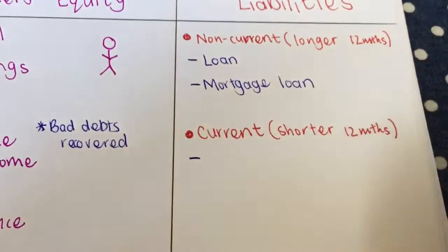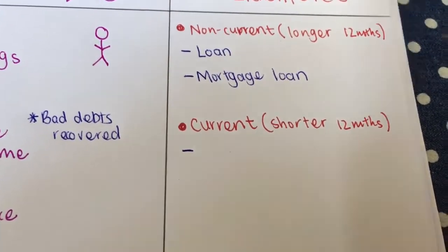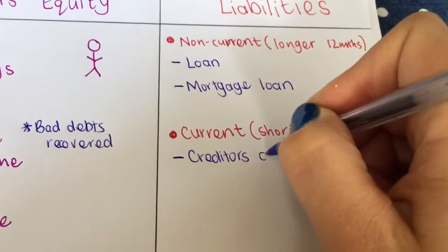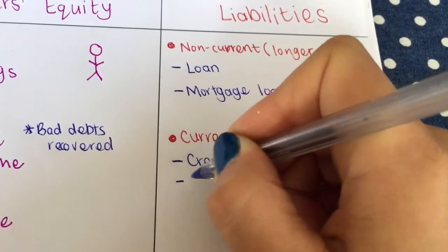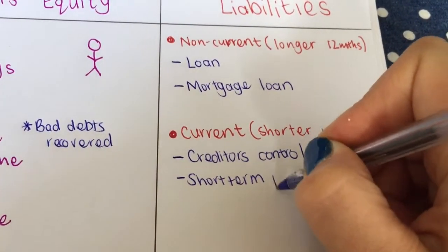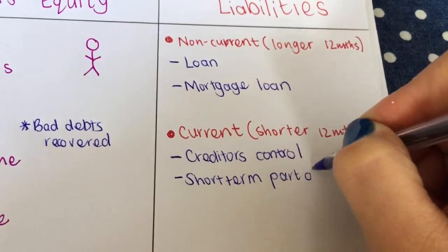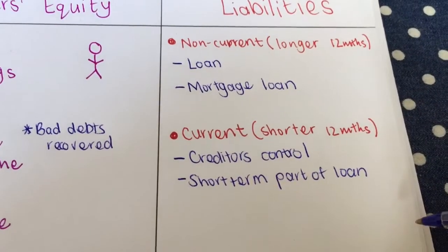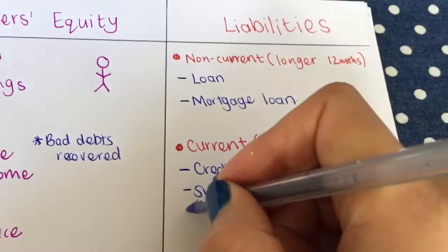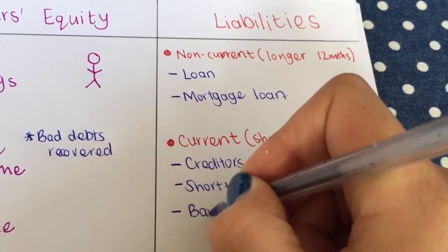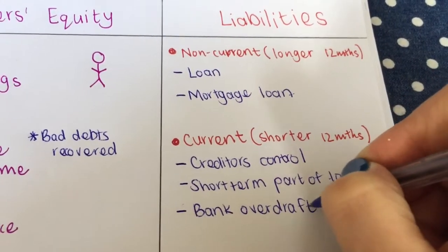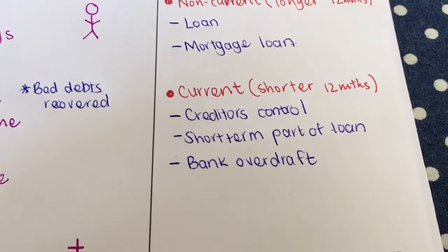Under my current liabilities, I will have creditors control. I will have a short-term part of the loan. You will learn this now in term three. This is when I'm going to pay back a part of my loan in the next year, so then I'll split it into long-term and short-term. And then bank overdraft, if it's in overdraft, will also fall under current liabilities.